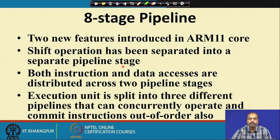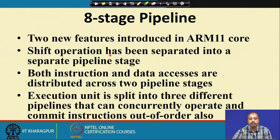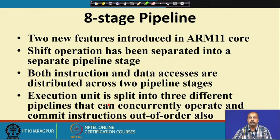Both instruction and data access are distributed into 2 pipeline stages, so the fetch part is also divided into 2 stages. From the 6-stage pipeline, we added a new shift stage making 7, then instruction and data are divided into 2 pipeline stages making 9. Additionally, the execution unit is split into 3 pipelines that can operate concurrently and commit instructions out of order.